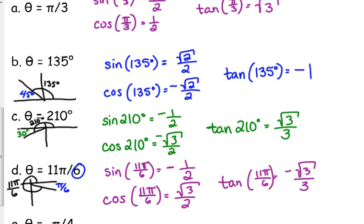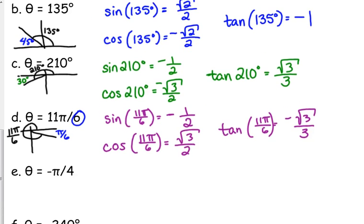Notice the values are exactly the same as the values from the previous example C, because they both have a reference angle of 30, or pi over 6 — one's in degrees, one's in radians, one's in the third quadrant, one's in the fourth quadrant.